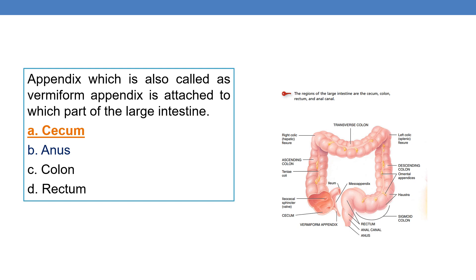Next question: the appendix, also called the vermiform appendix, is attached to which part of the large intestine? The answer is the cecum. The vermiform appendix is attached to the cecum of the large intestine.